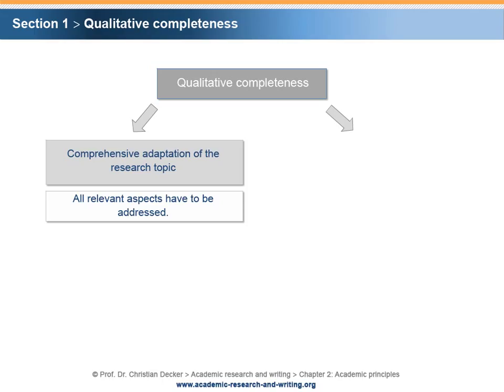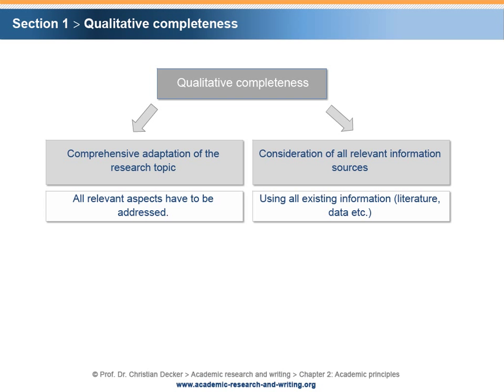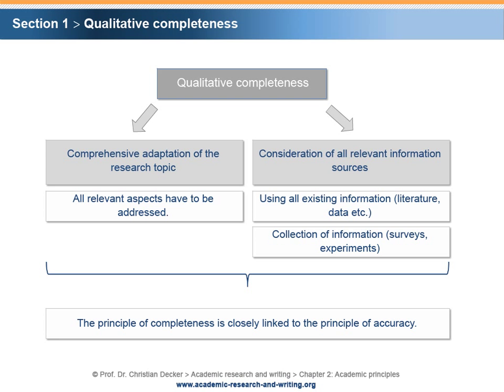Second, the principle of completeness implies the consideration of all relevant information sources. Upon availability, a researcher has to use all existing information, like literature or data, that stems from previous research. Alternatively, or additionally, the researcher has to collect new information by way of surveys or experiments.